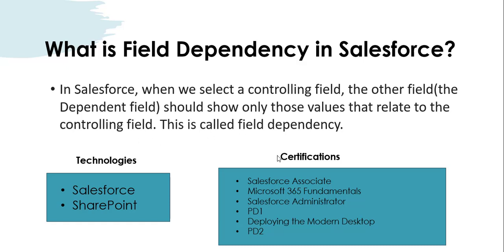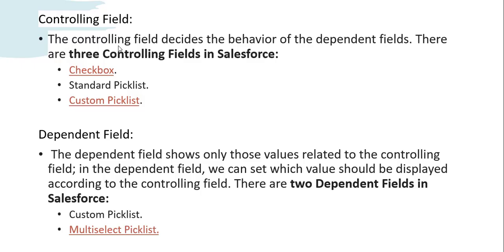Another field is certifications. In the technologies picklist, when you select Salesforce, in the certifications field you should only see the Salesforce-related certifications and not others. So let's see what is a controlling field and what is a dependent field.